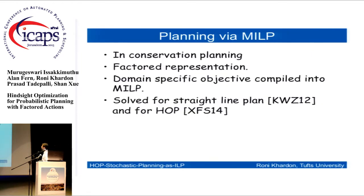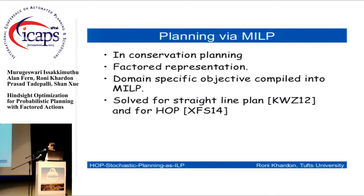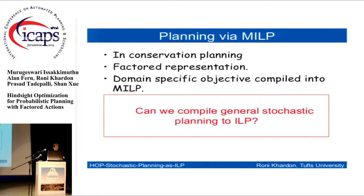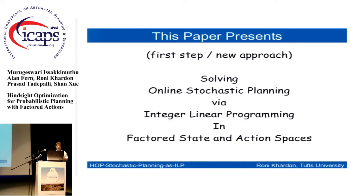The third line of work — which was actually my starting point — is a 2012 paper by Kumar, Wu, and Silberstein, who applied compilation ideas to a domain-specific bird conservation problem. They translated the conformant bird conservation problem into a mixed integer linear program and solved it. This approach did work with an exponential number of actions, so the question for us is: can we generalize this and do general planning rather than domain-specific planning?